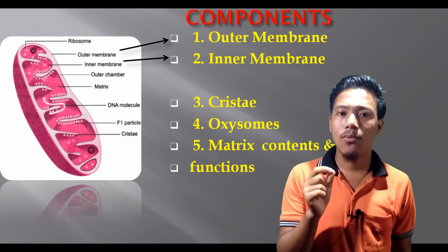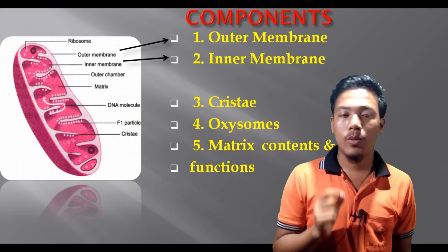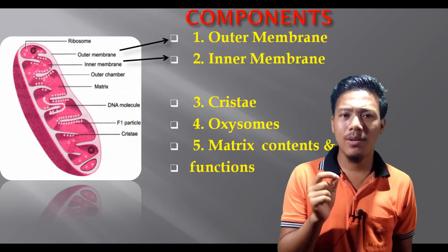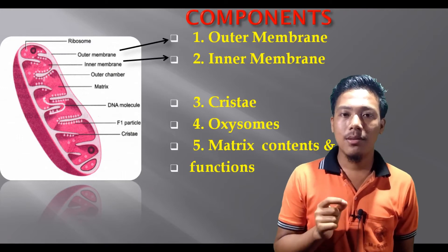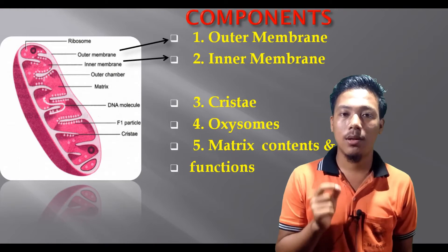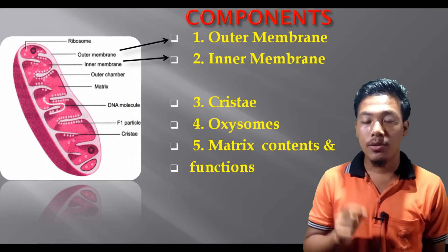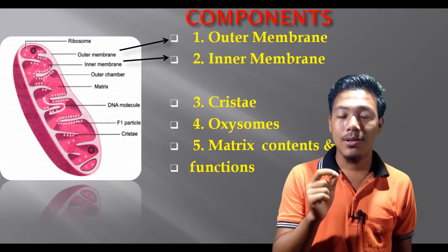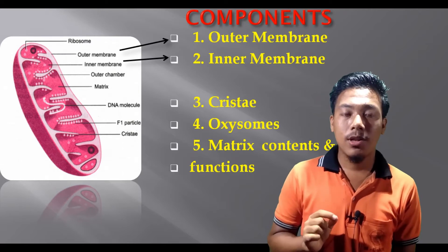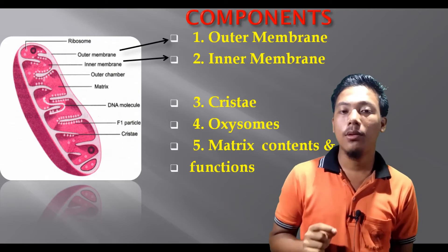Each mitochondria is bounded by two membranes: the outer membrane and the inner membrane. They are approximately similar in thickness — about 60 to 70 Angstroms thick. They are composed of two types of material: lipids and proteins — specifically a phospholipid bilayer sandwiched between two layers of protein molecules. The two membranes are separated from each other by inter-membrane space, which is filled with homogeneous fluid.